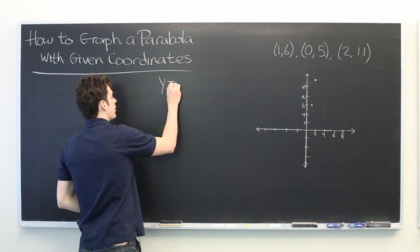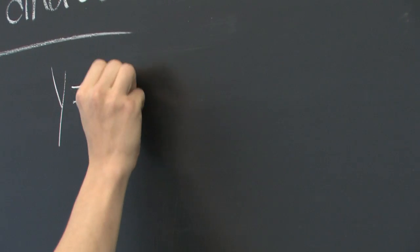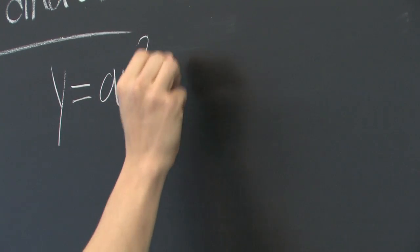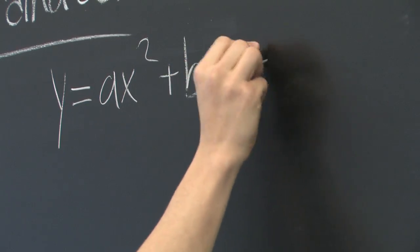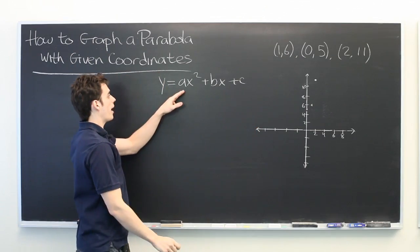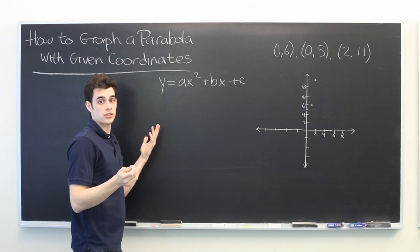It's helpful to recall that any parabola can be written in the form y equals ax squared plus bx plus c. Where a, b, and c are unknown constants at this point.